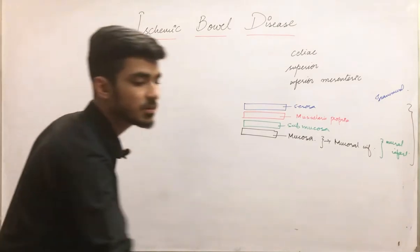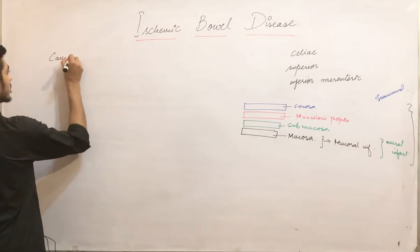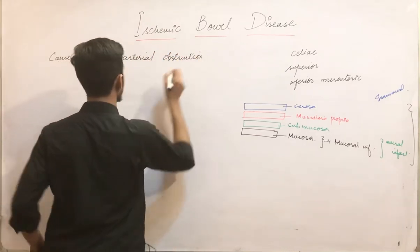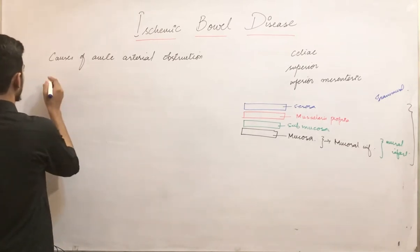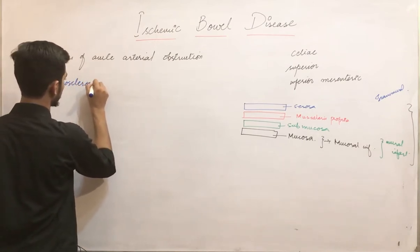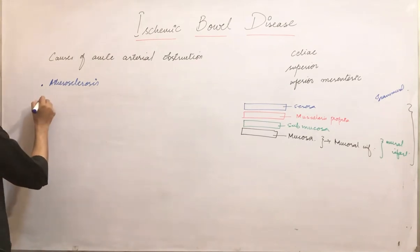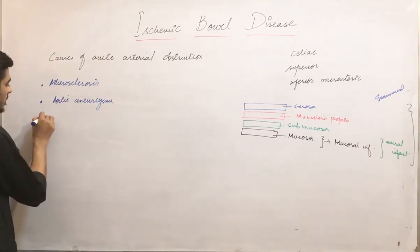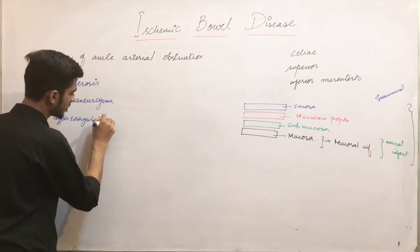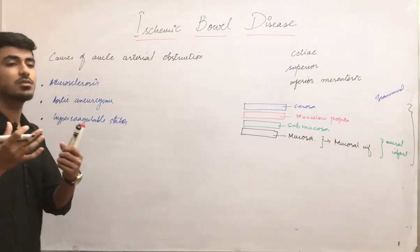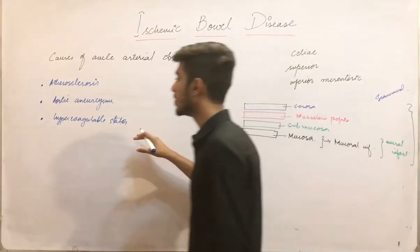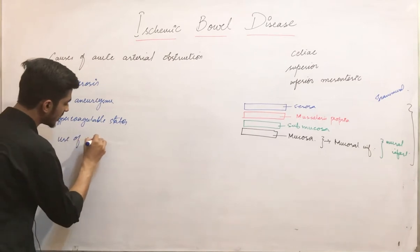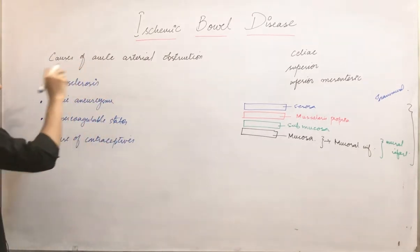Now I will discuss the causes of acute arterial obstruction, because ischemia occurs due to loss of blood supply. The causes include: first, atherosclerosis — the deposition of plaques in the arteries; second, aortic aneurysms; third, hypercoagulable states, where excess coagulation blocks the arteries; and fourth, the use of oral contraceptives, which may also result in bowel ischemia.